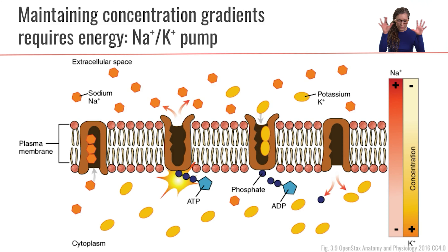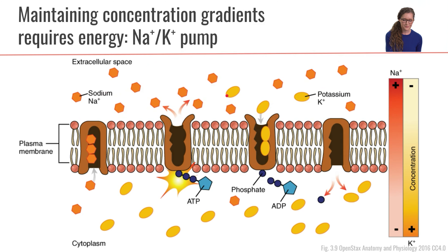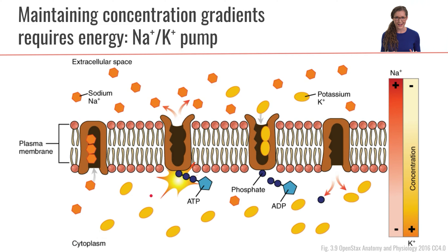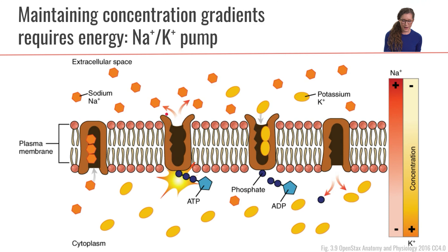Cells have a higher concentration of sodium ions on the outside of the cell in the extracellular space — we can see that here with the orange sodium ions outside the cell. Cells also have a higher concentration of potassium ions inside the cell, represented here by the yellow ovals. So: higher concentration of sodium outside, higher concentration of potassium inside. The sodium-potassium pump is responsible for maintaining these differences in concentration.